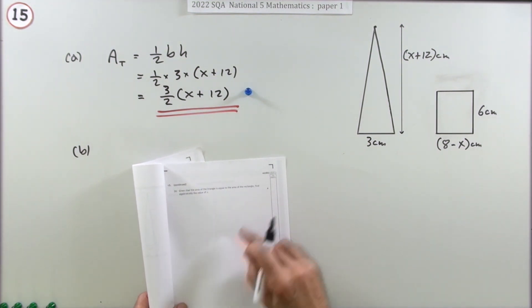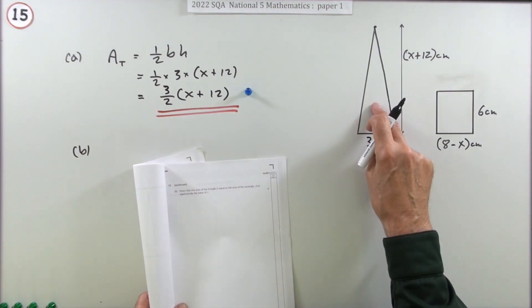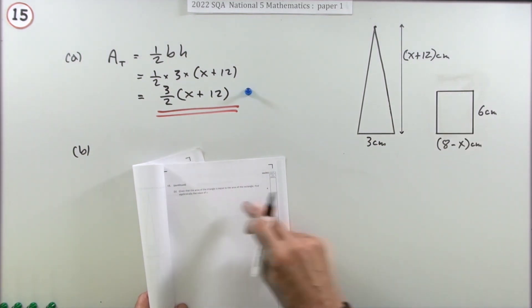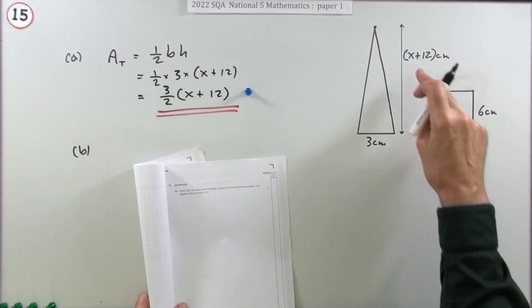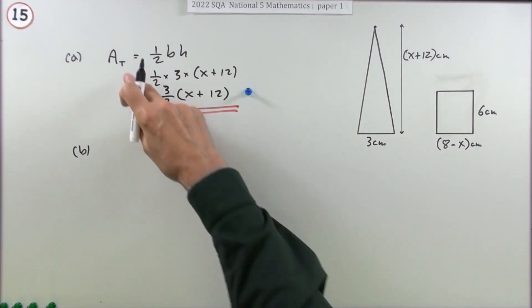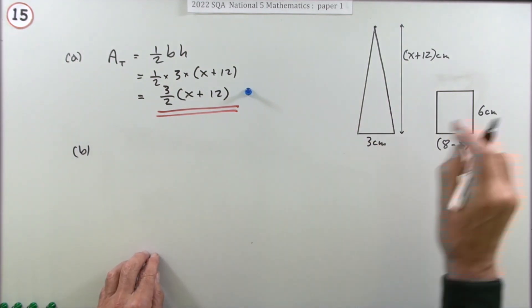Part B, for the remaining four marks. Given that the area of the triangle is equal to the area of the rectangle, find algebraically the value of x. So don't just try numbers for x until you find one that works. Find algebraically the value of x. Well, you've got an expression for the area of the triangle, so do the same.